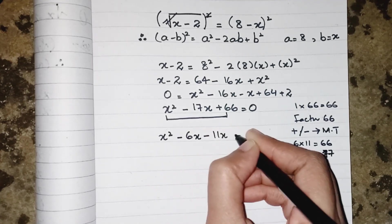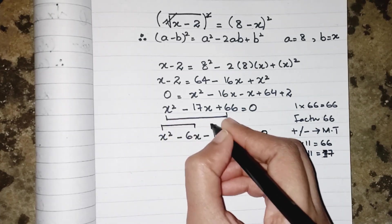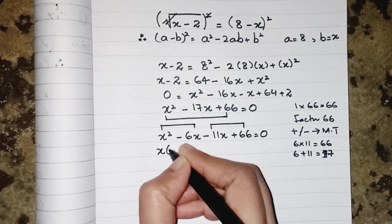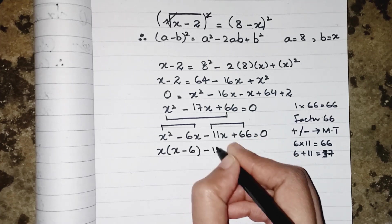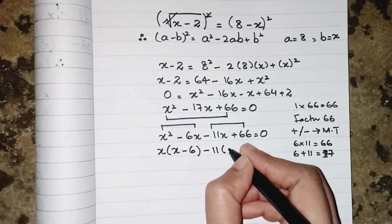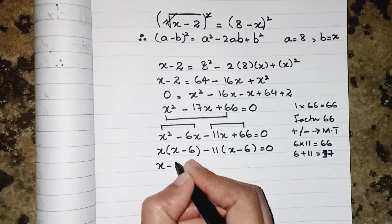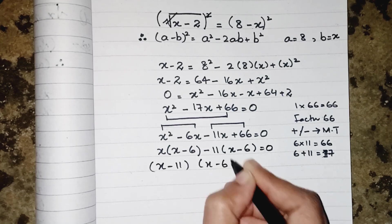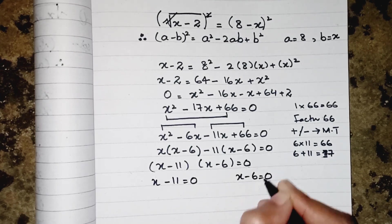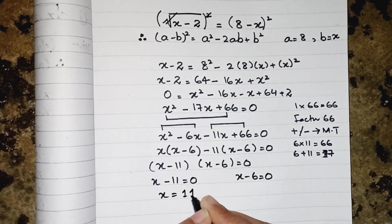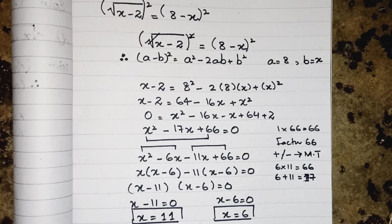So x squared minus 6x minus 11x plus 66 equals 0. Taking common from the first two and last two terms: x is common, giving x minus 6, and minus 11 is common, also giving x minus 6 equals 0. Therefore x equals 11 and x equals 6. Hope you liked the video, please share and subscribe, take care, bye bye.